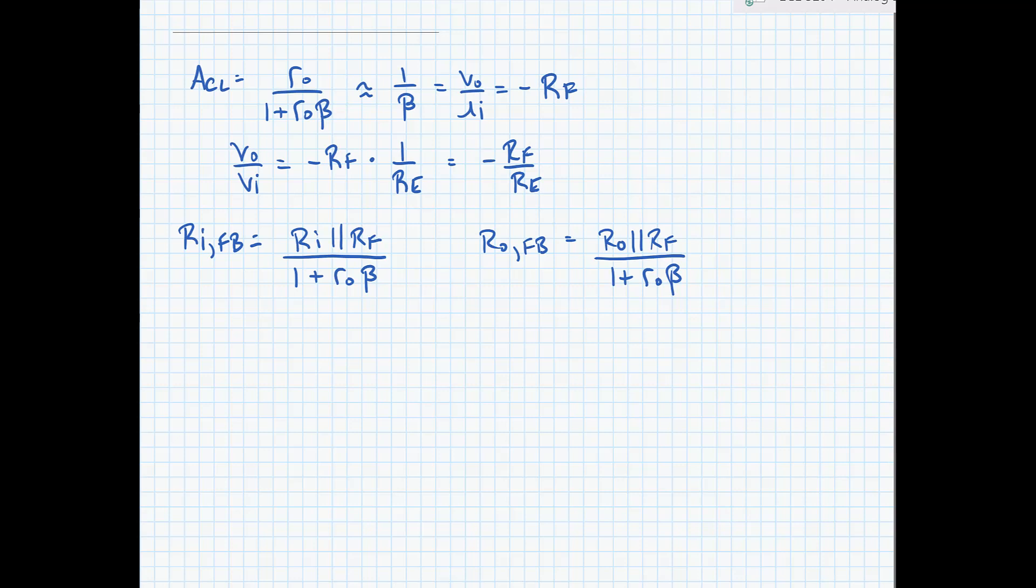Finally, with all feedback amplifiers, F3dB after feedback is equal to F3dB before feedback times 1 plus the loop gain. Alright, so there's our shunt-shunt amplifier example. We'll do another example in the next video.